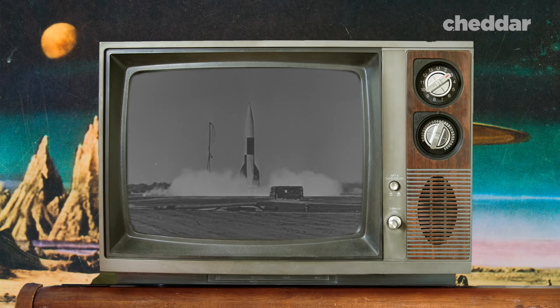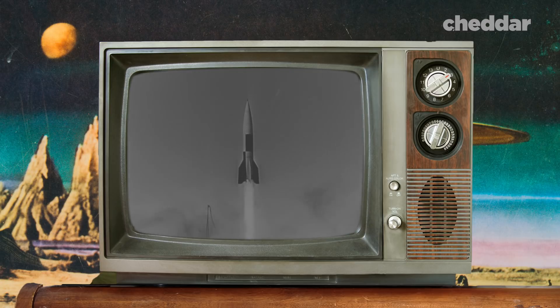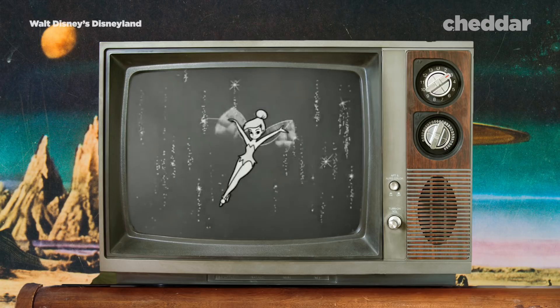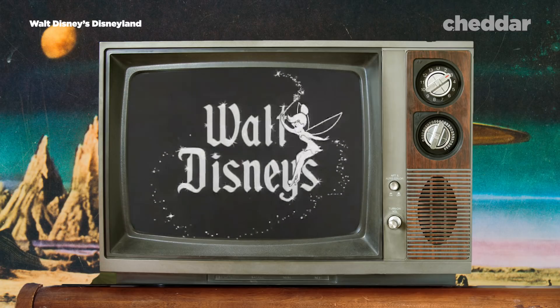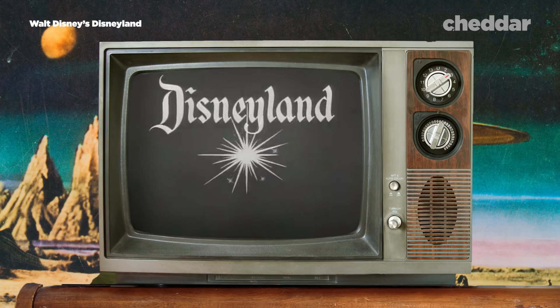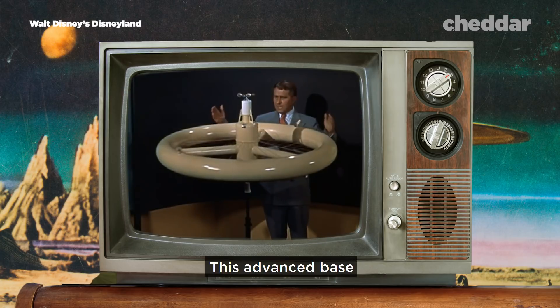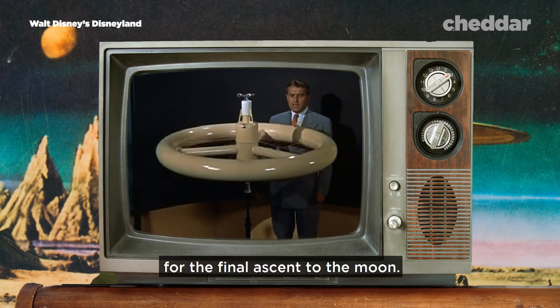The station was the brainchild of Wernher von Braun, a brilliant German rocket engineer who had come to work for the US after World War II. He explains the station on Walt Disney's anthology series, Disneyland, emphasizing its more family-friendly role as a jumping-off point for space exploration. This advanced base, or space station, will be headquarters for the final ascent to the Moon.